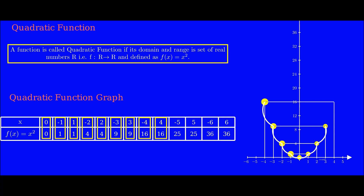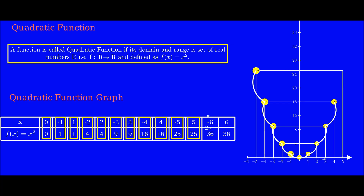Again, for the value of x equal to minus 5, f(x) would be 25. Also, if the value of x is positive 5, f(x) would be 25. If the value of x is equal to minus 6, f(x) would be 36. And you can easily guess that if the value of x is equal to positive 6, it would again be 36.